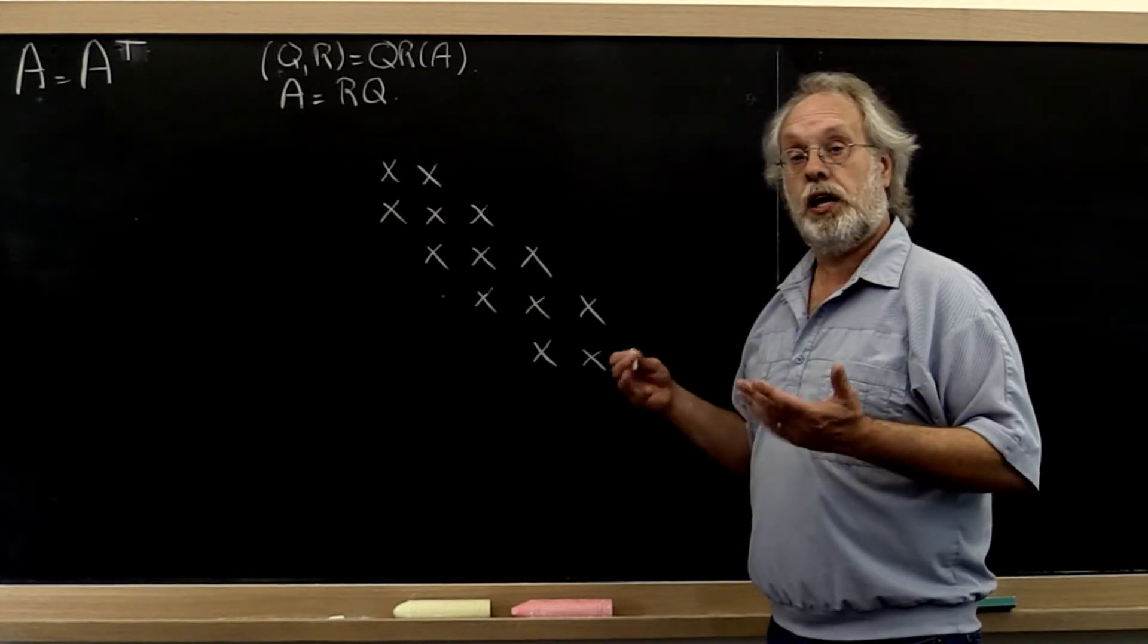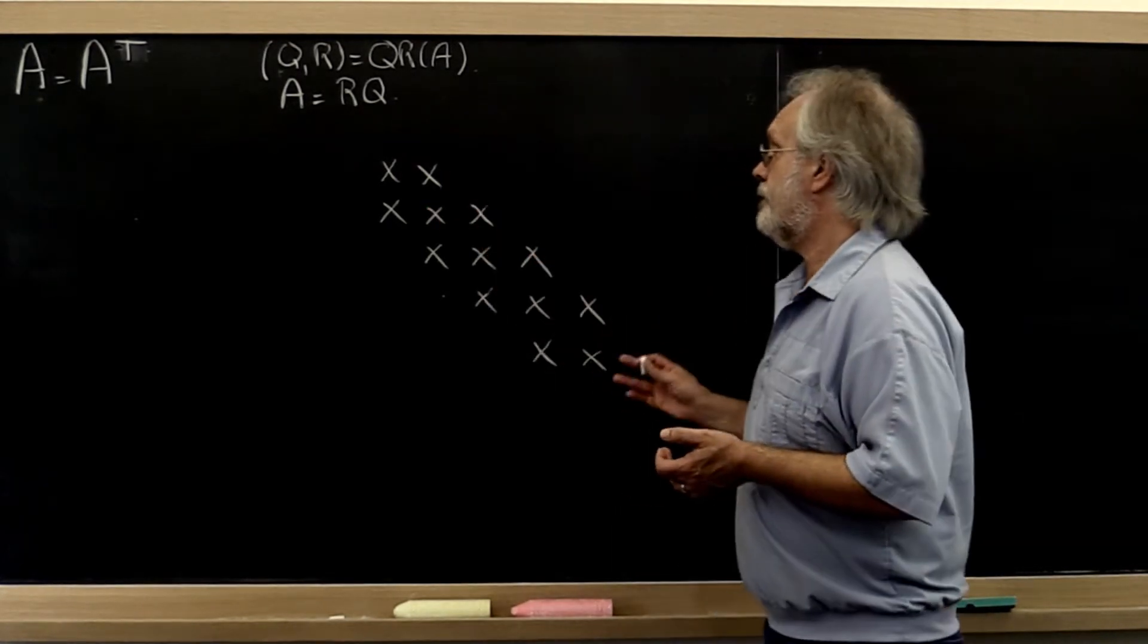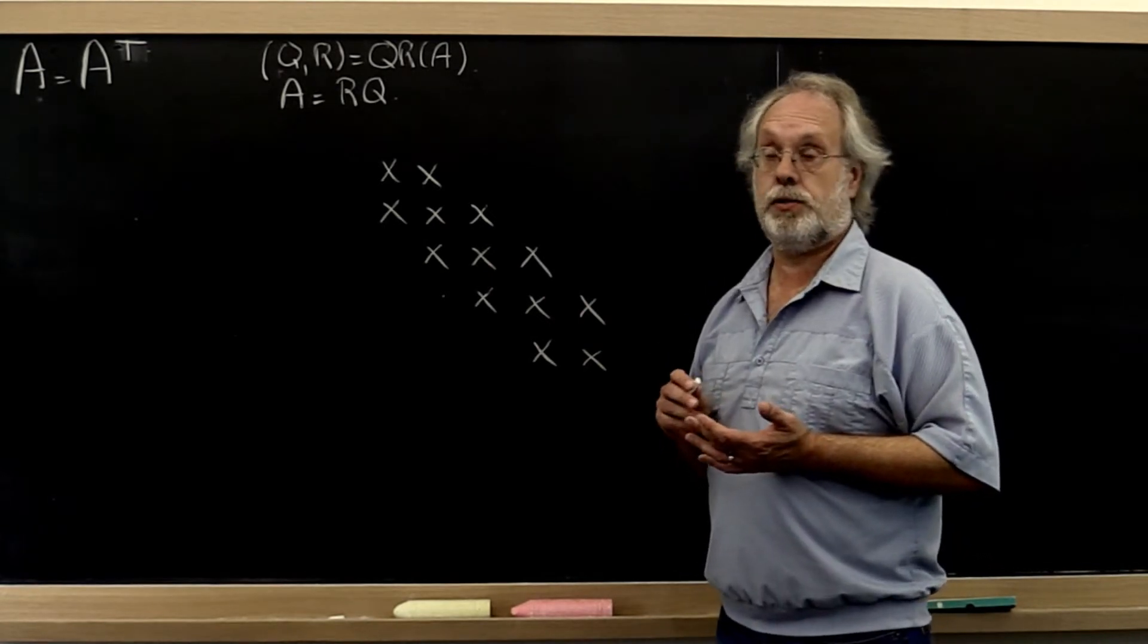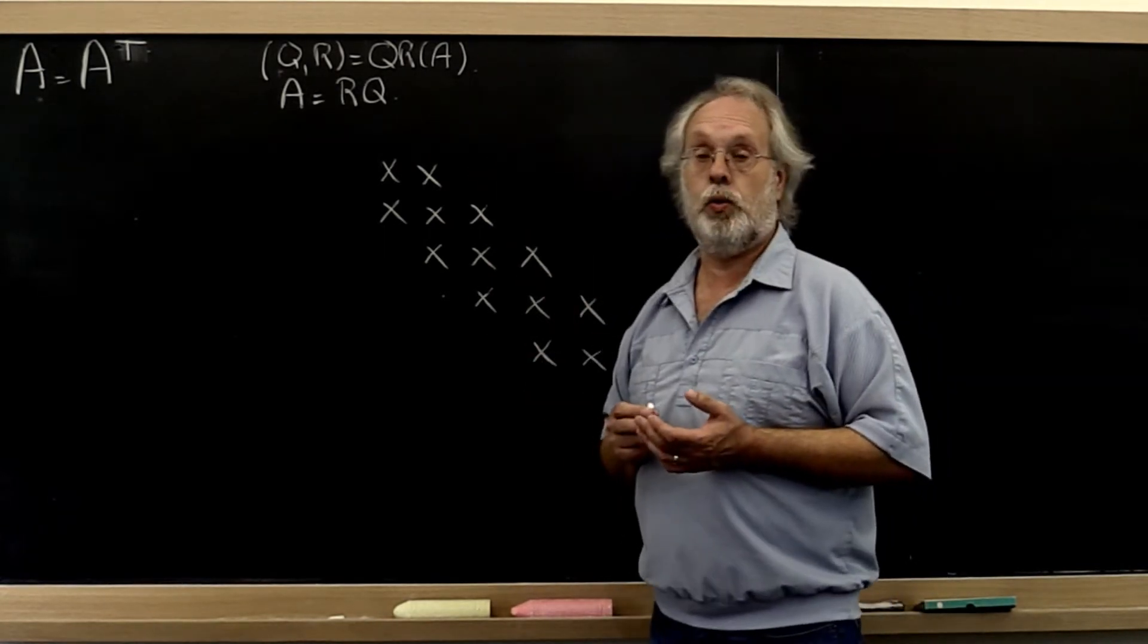And the question now is can we somehow take advantage of the fact that this is a tridiagonal matrix when we execute the QR algorithm.